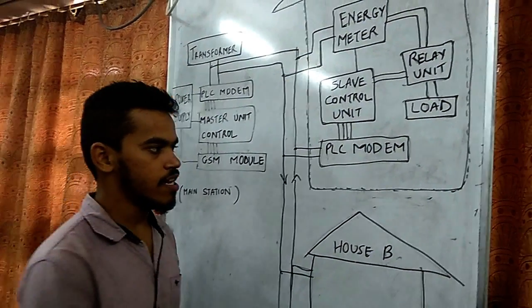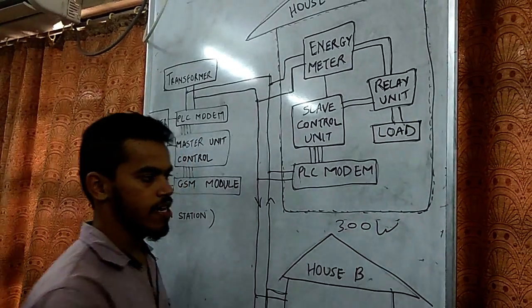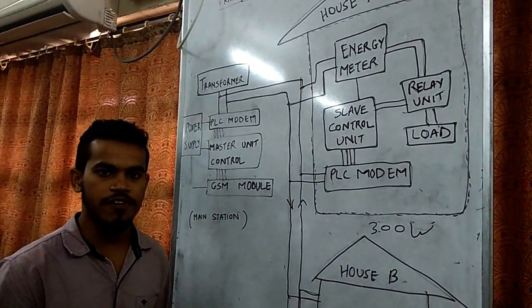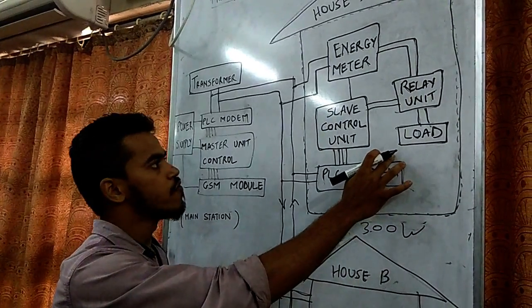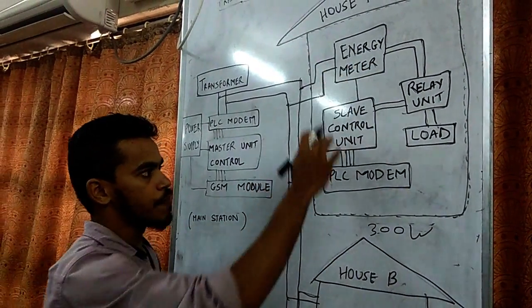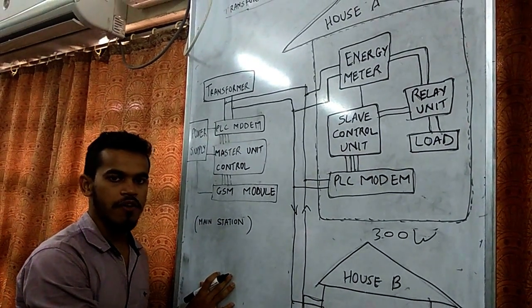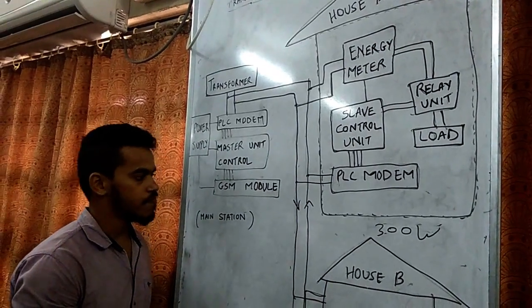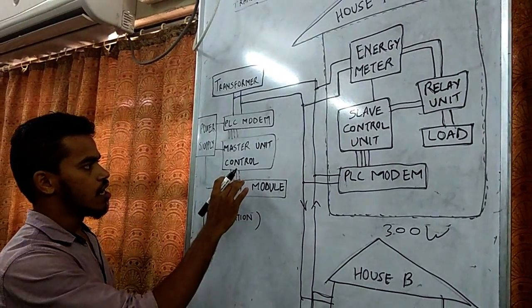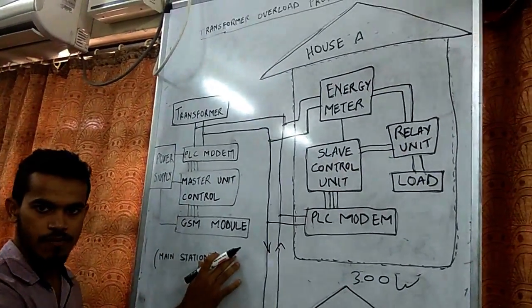For example, if this house is having a 300 watts allocated limit and is using more than 300 watts, the data along with the ID of this house will be sent through PLC modem to the main distribution transformer. The main distribution transformer will come to know that house A is using excessive power.